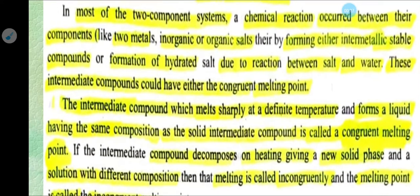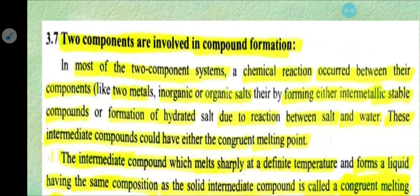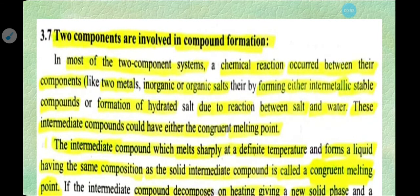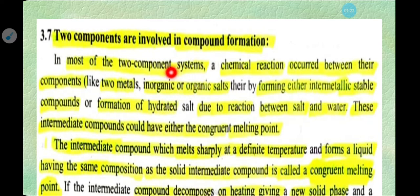The two-component system involves the formation of new compounds or new phases. This involves the formation of new compounds during phase transformation — how a third compound is formed from two individual compounds during the transformation of one phase to another. In most two-component systems, a chemical reaction occurs between the components, whether metals, inorganic compounds, salts, or organic compounds.